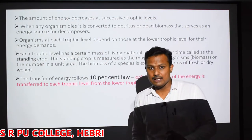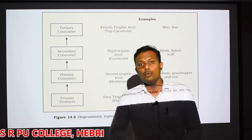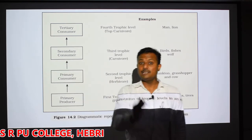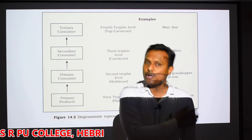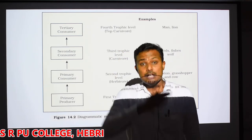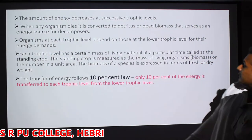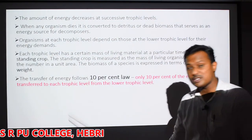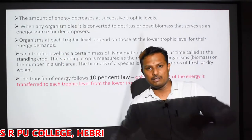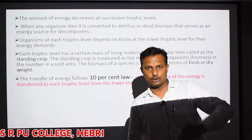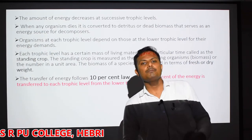For any food chain - whether GFC or DFC - the amount of energy is not the same at each trophic level. Energy gets decreased from one level to another level. For any ecosystem, the energy decreases by approximately 10%, and that is why we call it the 10% law. The transfer of energy follows the 10% law, meaning only 10% of the energy is transferred from each lower trophic level to the next higher trophic level.